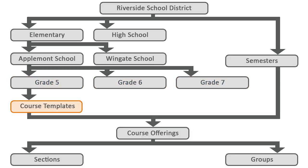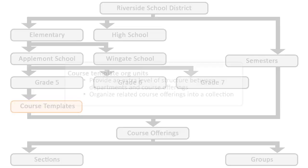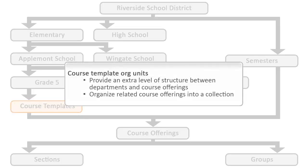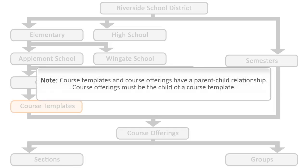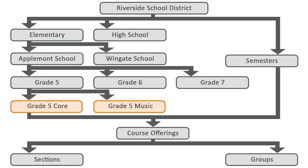Next, we will discuss course templates. Course templates add an extra level of structure between departments and course offerings. They act as a container that collects related course offerings. Course templates and course offerings have a parent-child relationship — course offerings must be the child of a course template. For example, there are two types of classes: grade 5 core and grade 5 music. Course templates group together course offerings that fall within these categories.